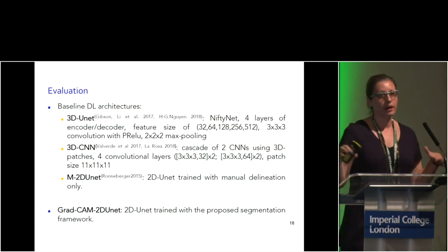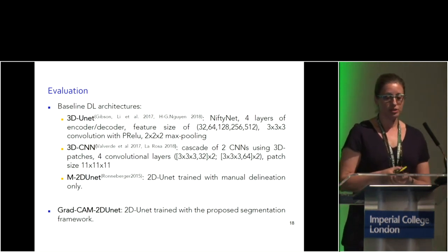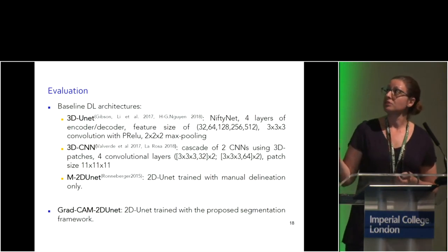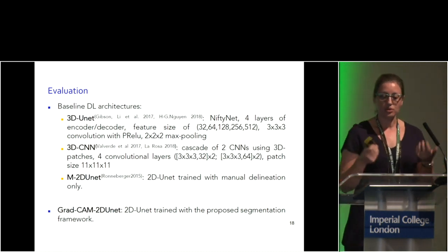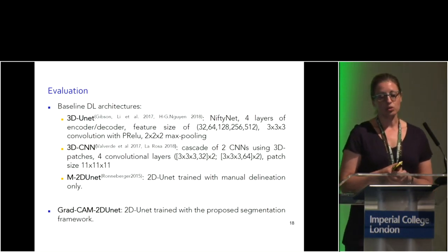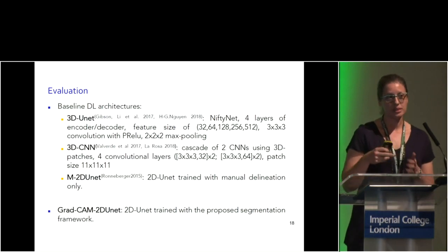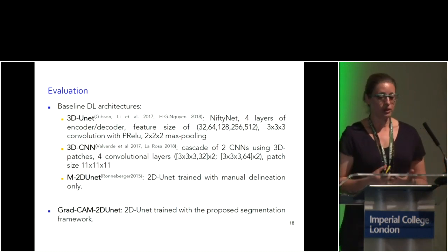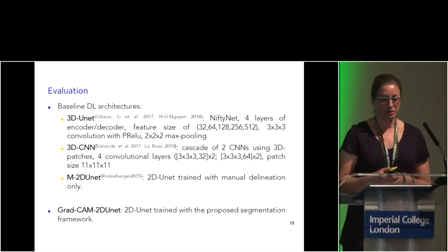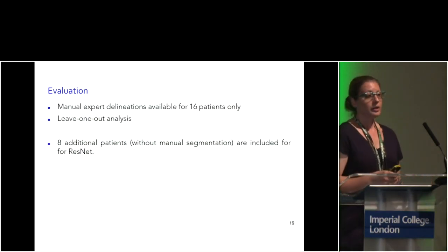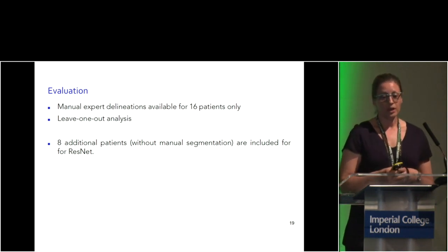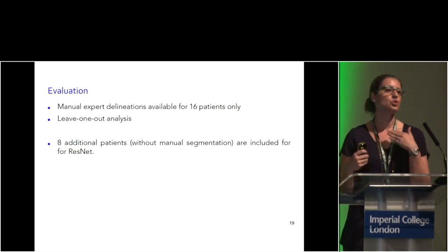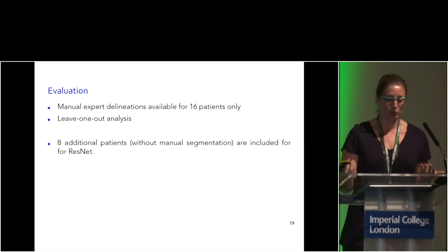We set up a baseline by comparing our approach with a 3D U-Net from our previous work, and with a cascade of two CNNs — an approach from multiple sclerosis work — that operates with patches. Of course, we also compare the 2D U-Net trained with manual segmentations against the 2D U-Net trained with our generated segmentations. We had manual annotations for 60 patients and proceeded with a leave-one-out analysis. For generating our own labels, we used the 24 uveal melanoma patients since there we don't need manual annotations.